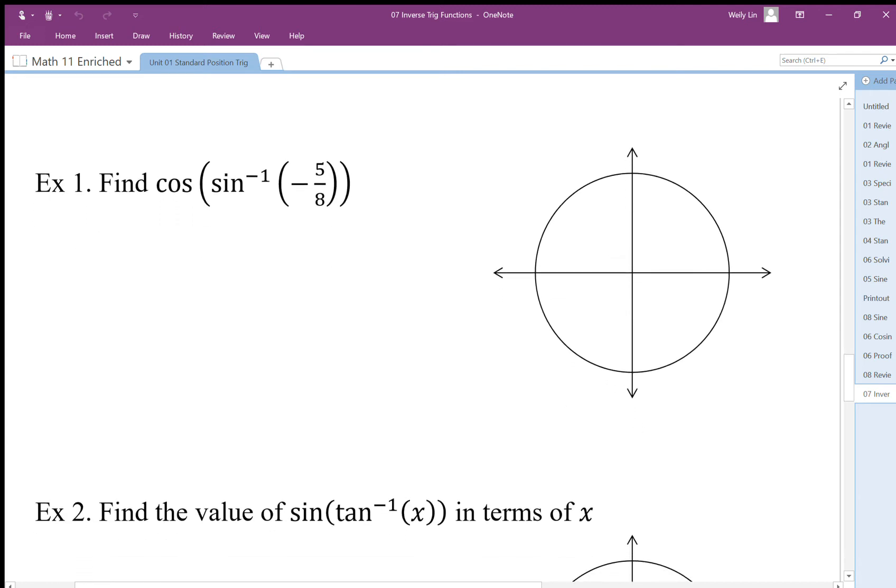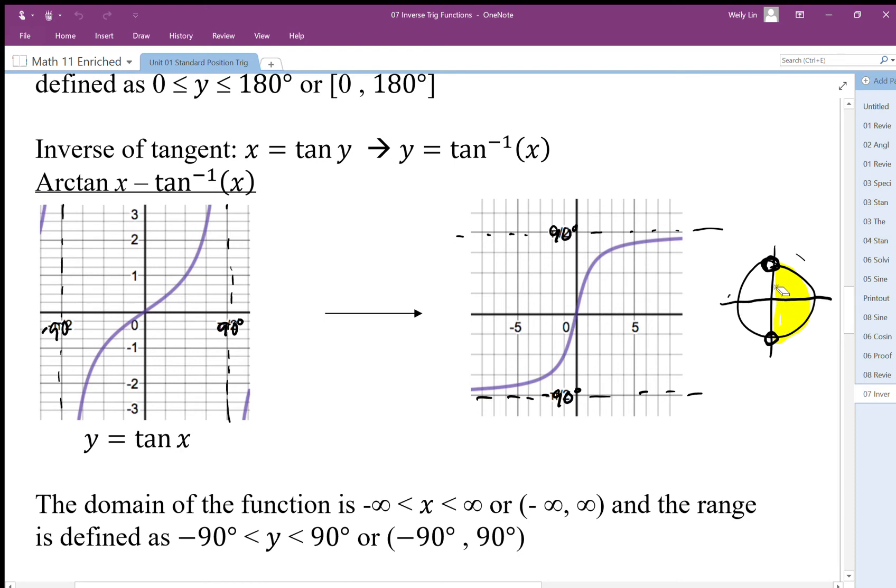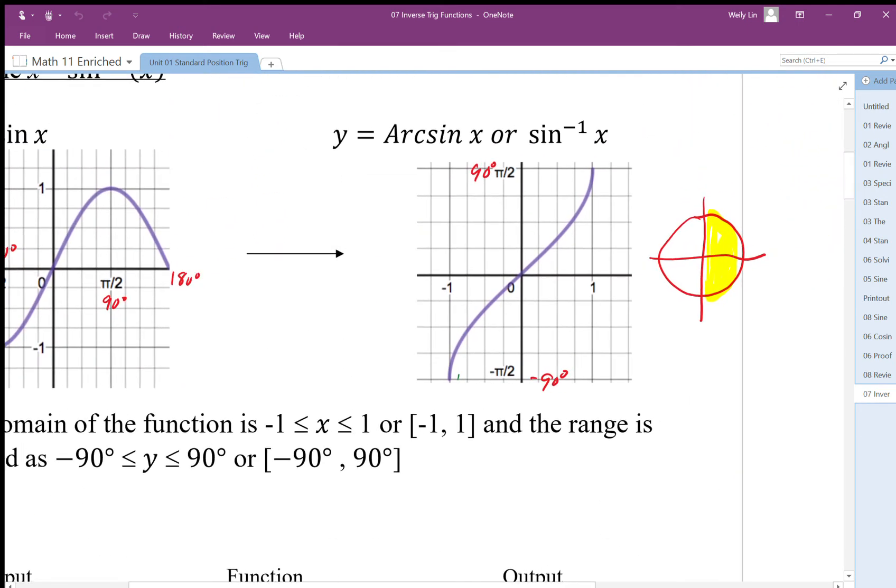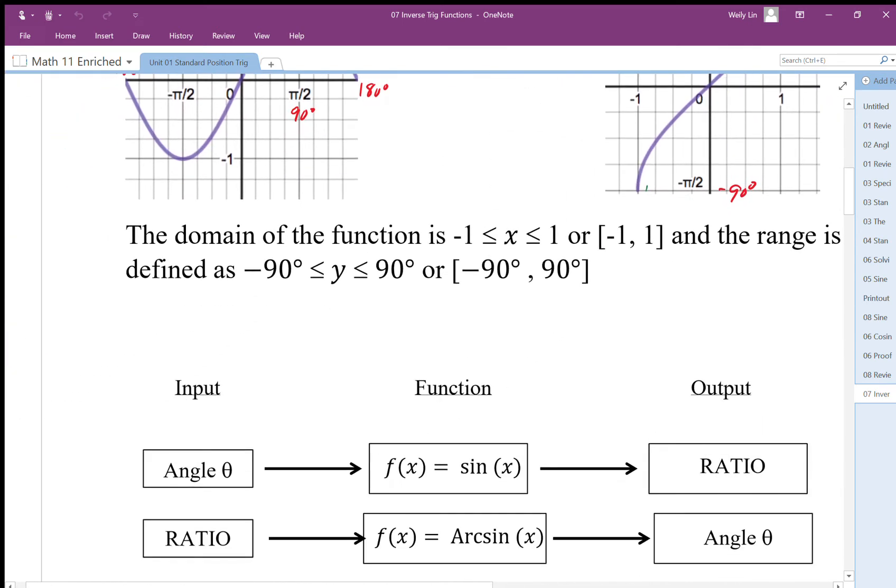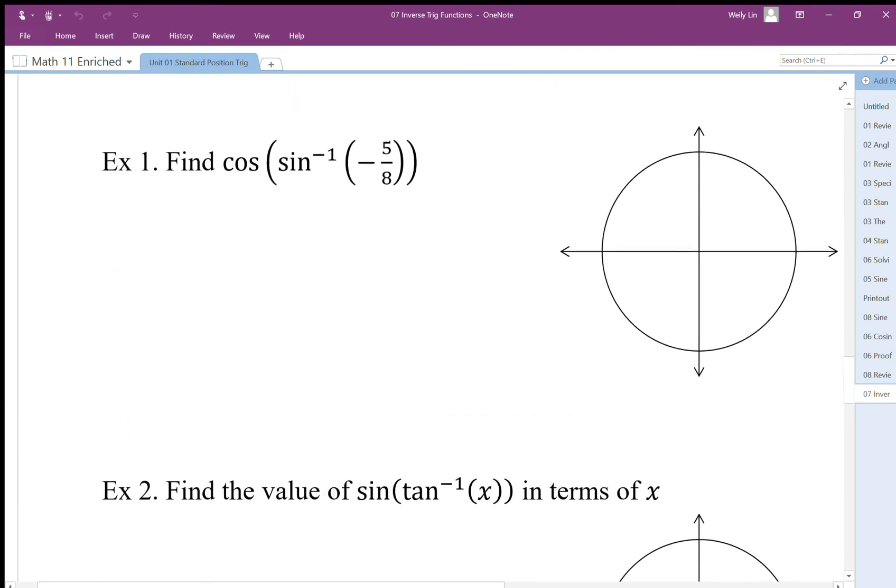What's really important from the previous part is the output, the range of the inverse trig functions that are restricted. When we undo tan, we don't get both sides of the circle, we only get from negative 90 to positive 90. When we undo cos, we don't get the bottom half of this circle, we only get from 0 to 180. When we undo sine, we don't get both halves of the circle, again we only get from negative 90 to positive 90. That's the important part to understand when we are going to apply these inverse trig functions to these problems.